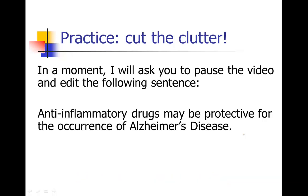When I edited this sentence, I read through and found 'may be protective for the occurrence of' to be quite wordy. So rather than 'be protective for,' how about just 'may protect against'? And we don't really need 'the occurrence of' — we may protect against Alzheimer's disease. We don't need 'the occurrence of.'